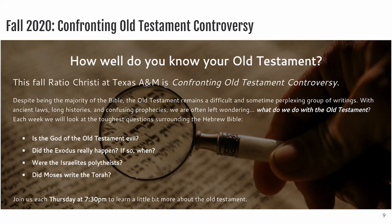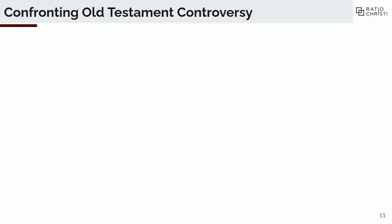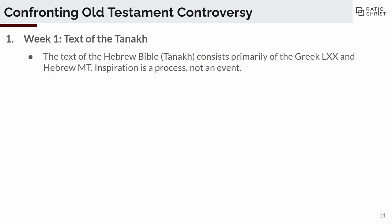This semester is Confronting Old Testament Controversy. Let's do a quick recap of the semester so far. The first week we talked about the text of the Old Testament, or Tanakh, or Hebrew Bible — these are all synonymous. We specifically talked about the Masoretic text and the Septuagint. The Septuagint is a Greek translation from about 250 BC. The Masoretic text is the main Hebrew text used for most Bible translations today. This will be important today, so hold on to that nugget.